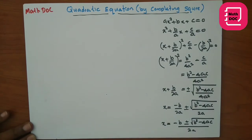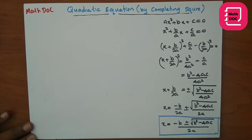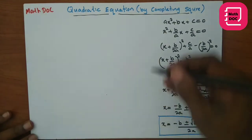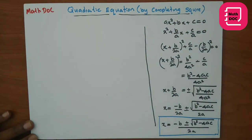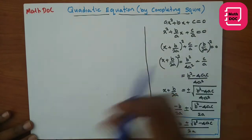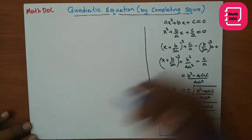Finally, x = (-b ± √(b² - 4ac)) / 2a. This process we call the complete square method and these are the solutions. To find solutions for quadratic equations you can apply this formula directly, or you can work through this process step by step.